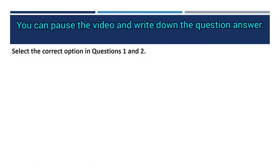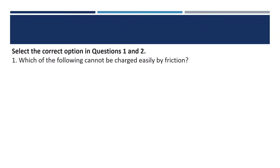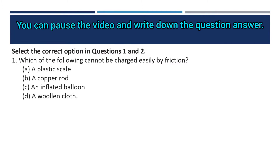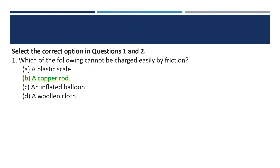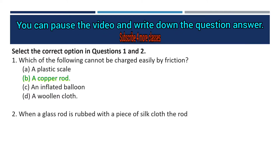The first question is: which of the following cannot be charged easily by friction? The options are: a plastic scale, a copper rod, an inflated balloon, and a woolen cloth. The answer is copper rod, because in a copper rod, electricity is not static — it is movable electricity, so you cannot charge it easily by friction.